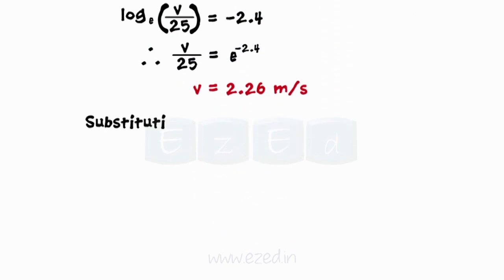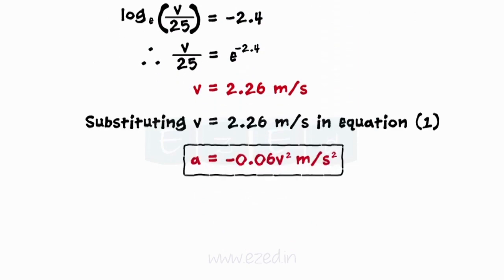On substituting the value of velocity in equation 1, we get the acceleration of the particle as a = -0.31 m/s². The negative sign indicates that the particle decelerates.